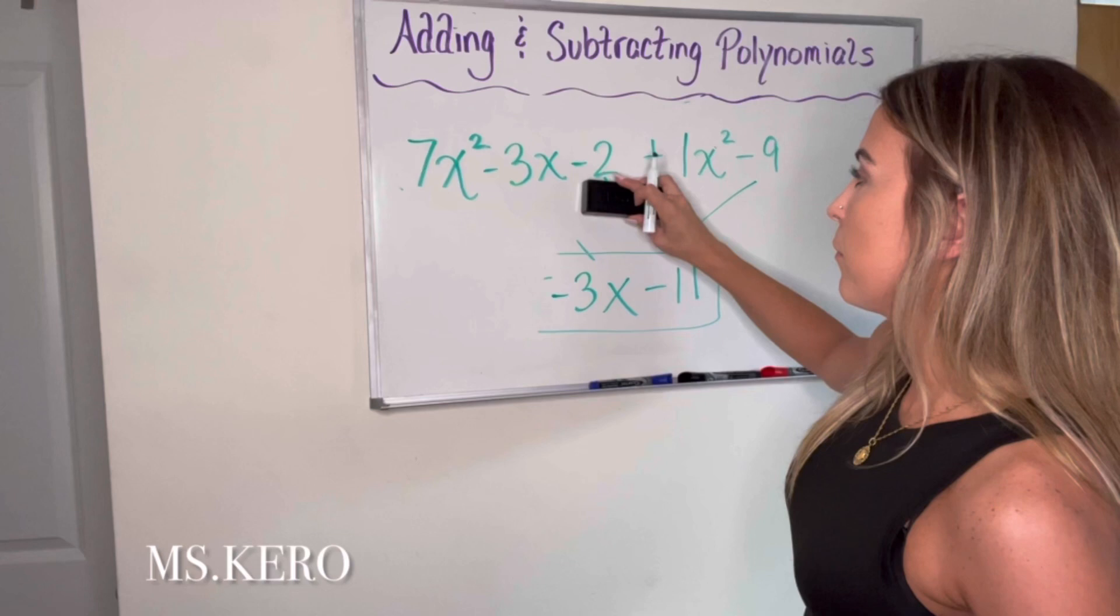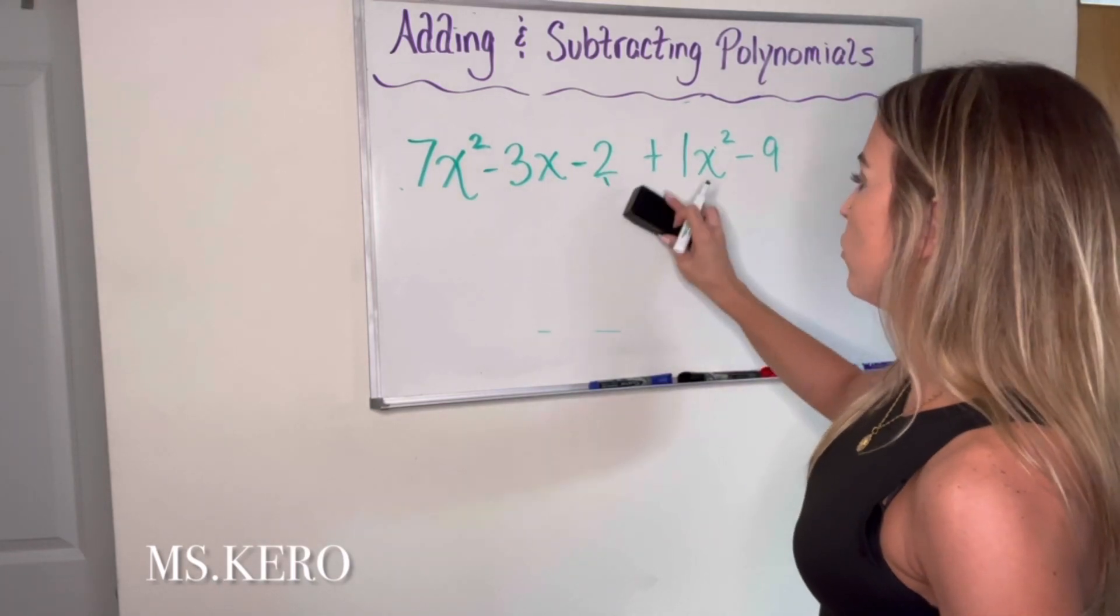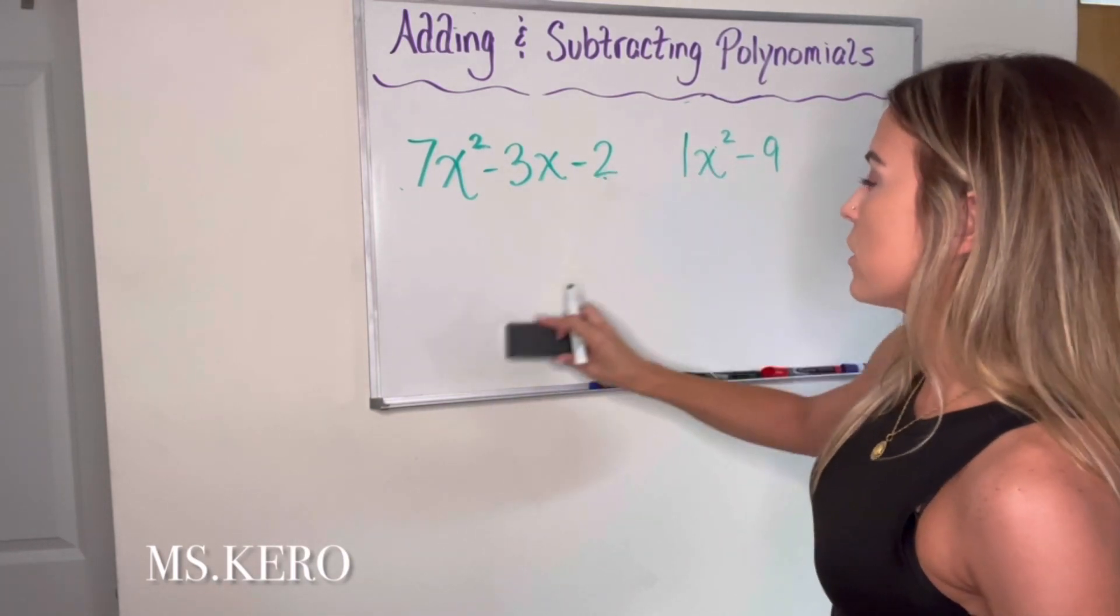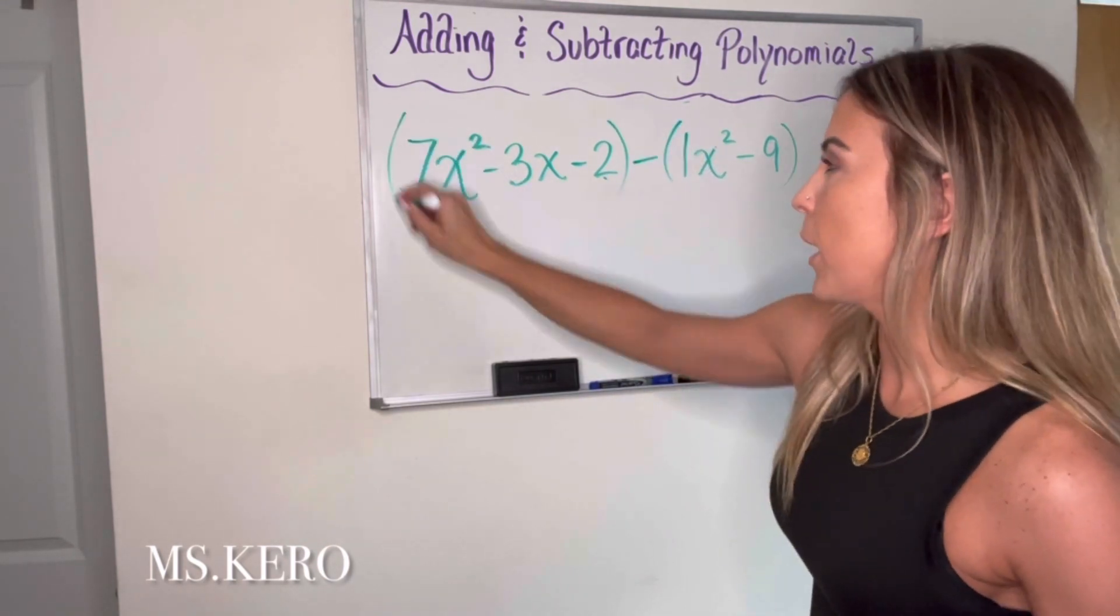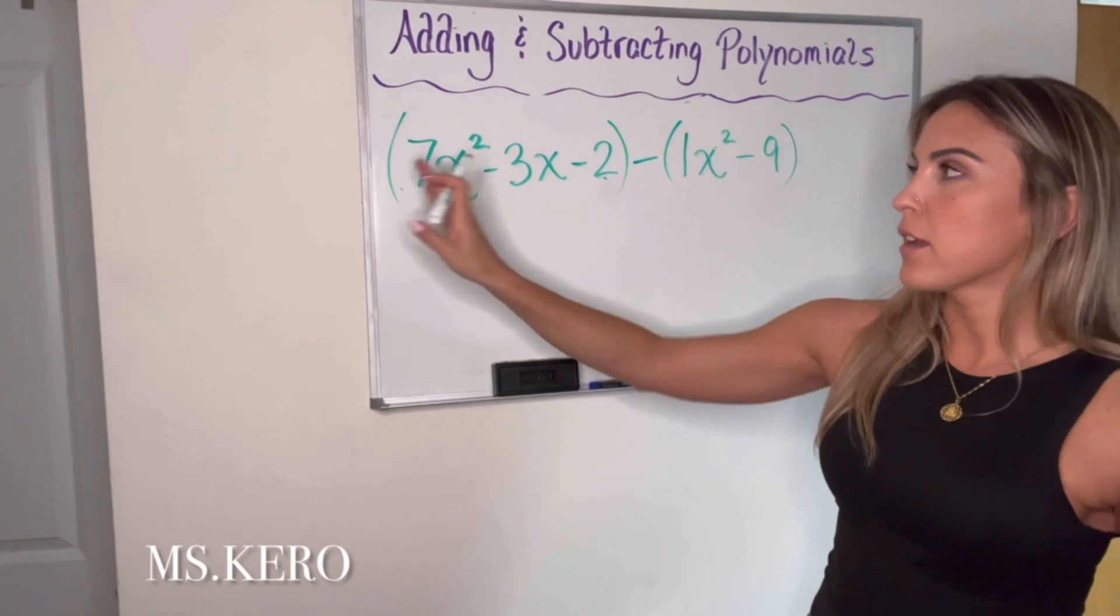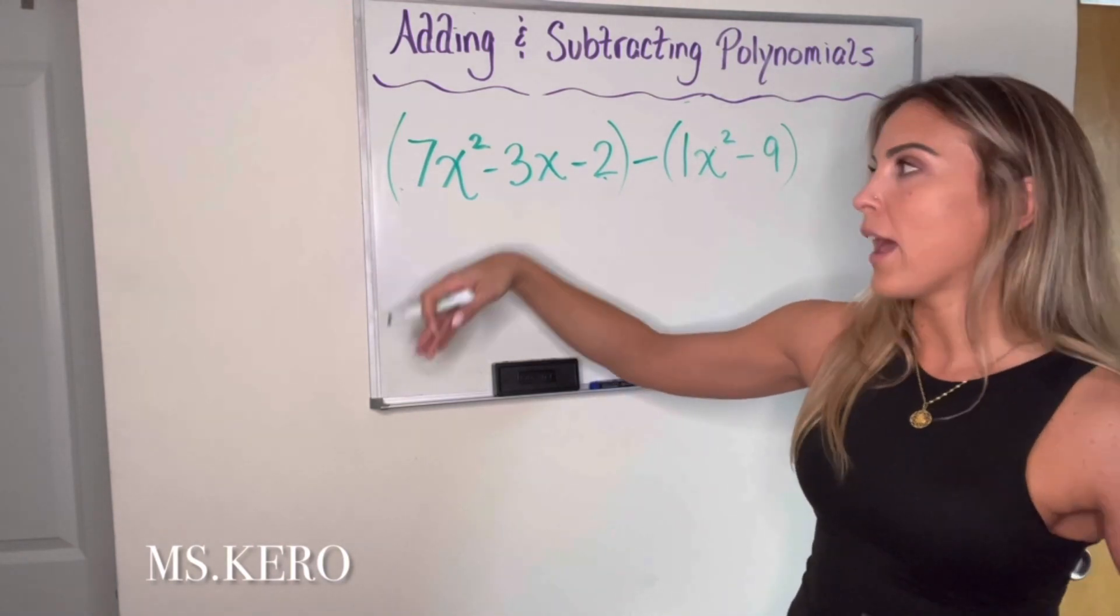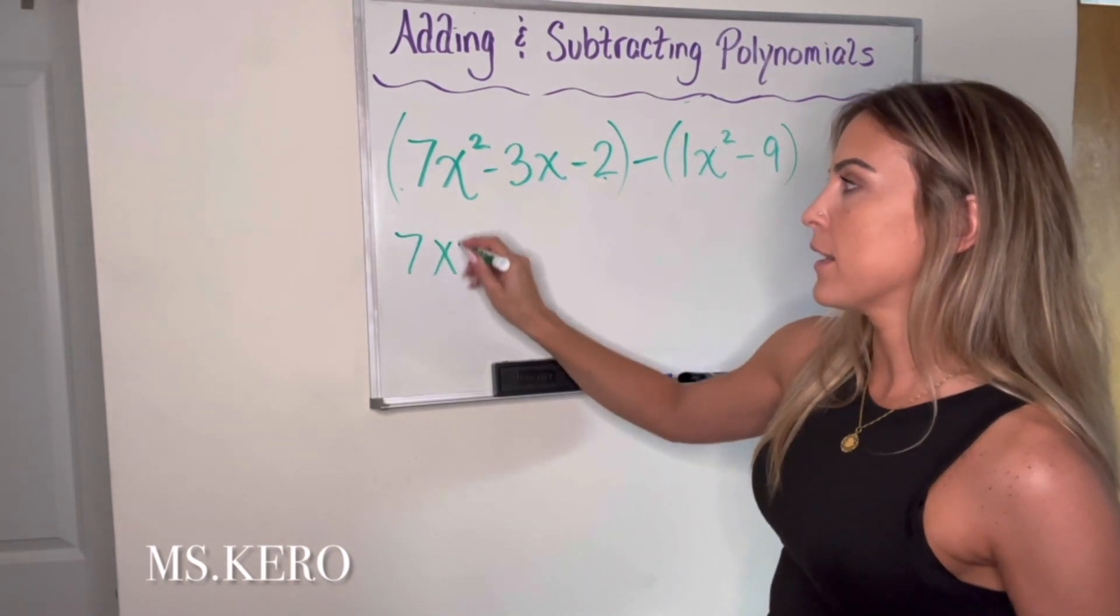Let's do a subtraction problem. I'm going to start with the same two parentheses, but we're going to change it to subtraction instead. And this is where it gets a little bit tricky. So this first parentheses, again, because there's nothing in front of it to distribute, I can just take off those parentheses and wouldn't make a difference.